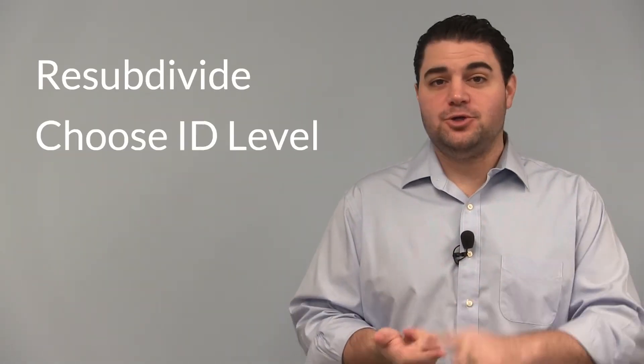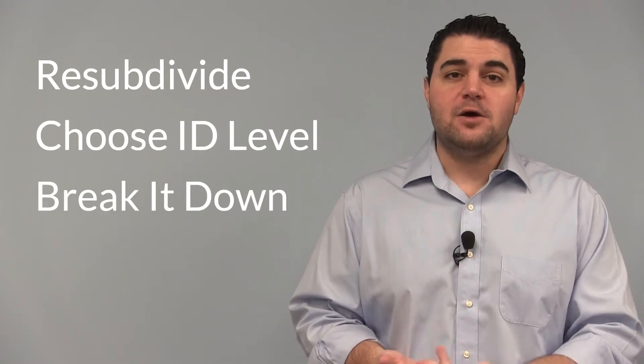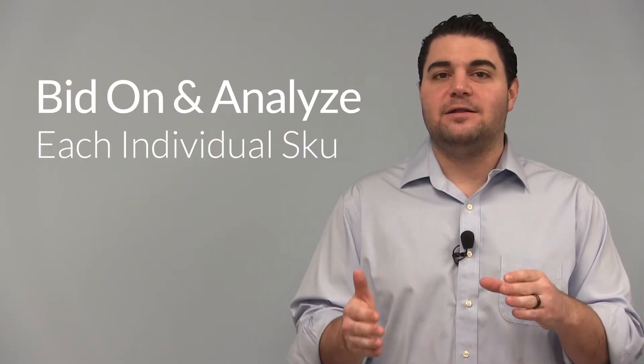For this group specifically, all this retailer needs to do is resubdivide, choose the ID level, break it down, and there you go. Now they have every single one of their products as their own line item, and they can bid and analyze each individual SKU as they stand on their own.